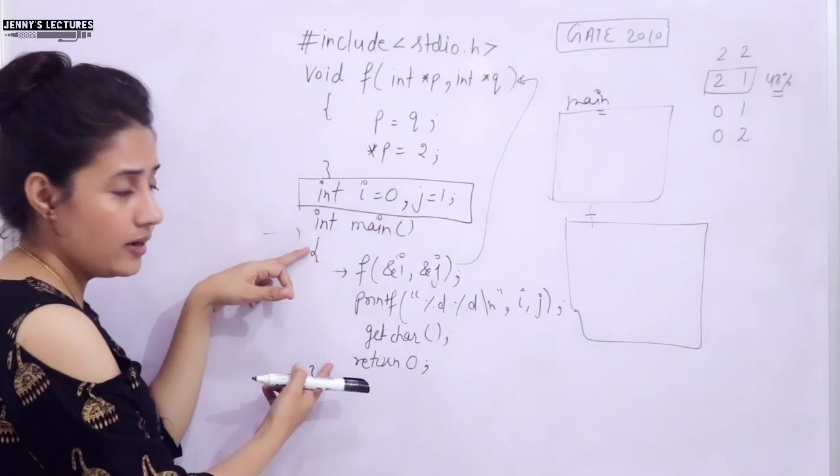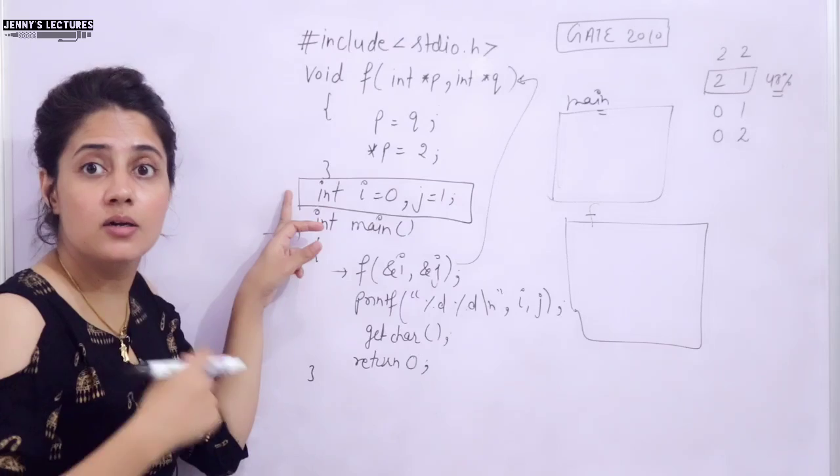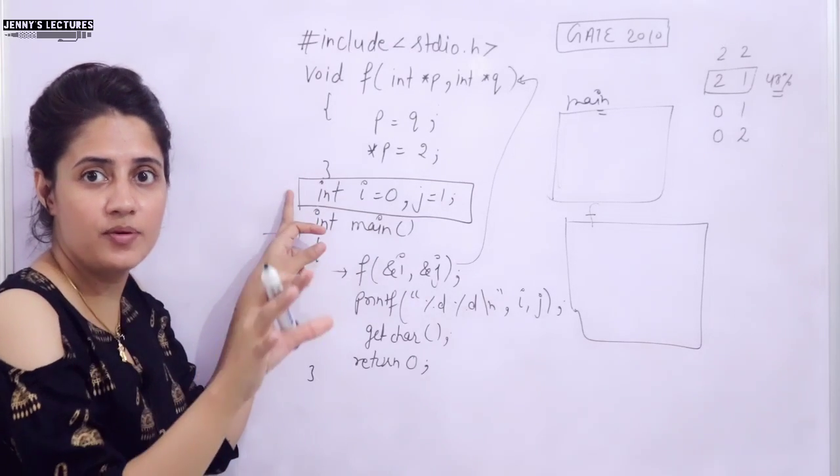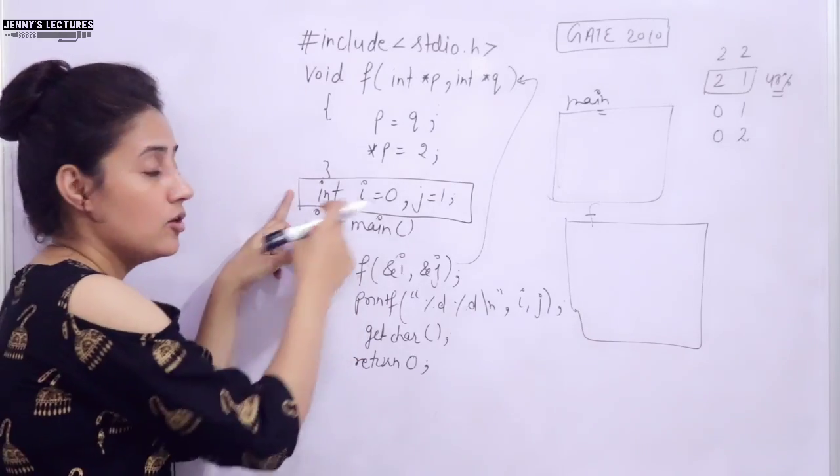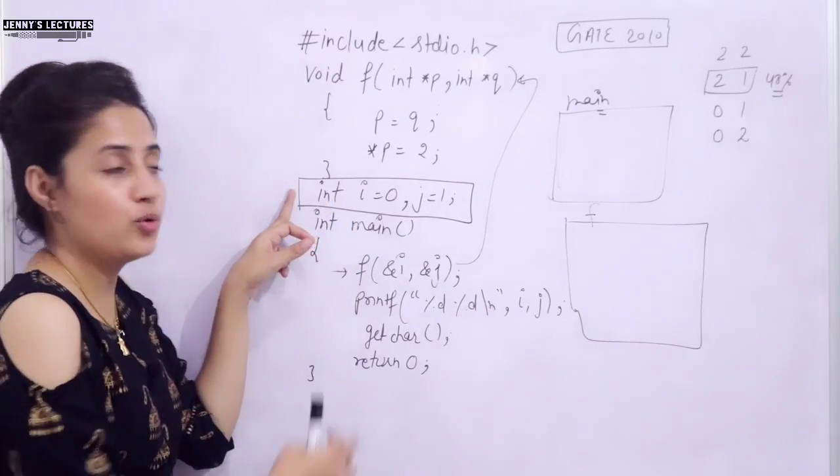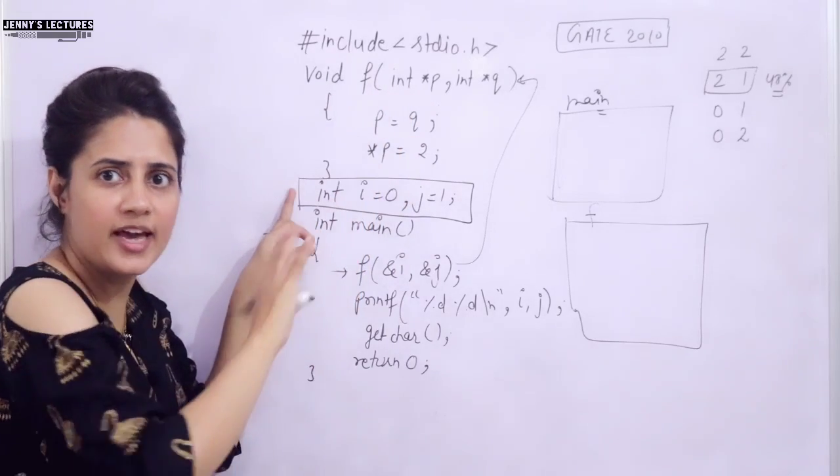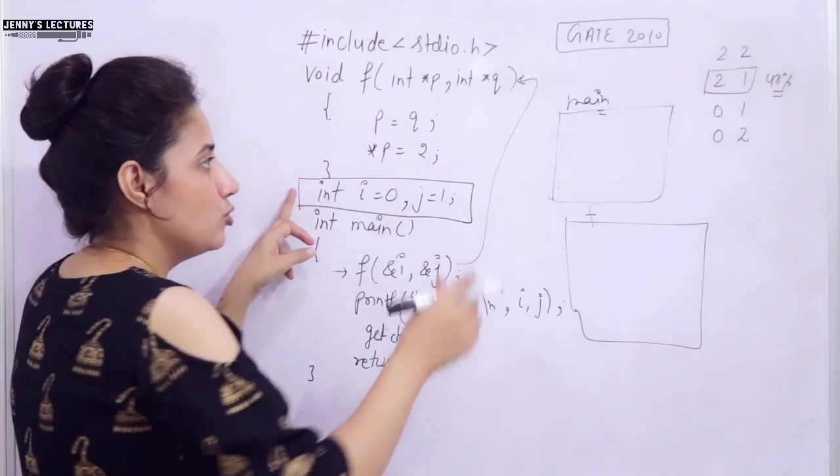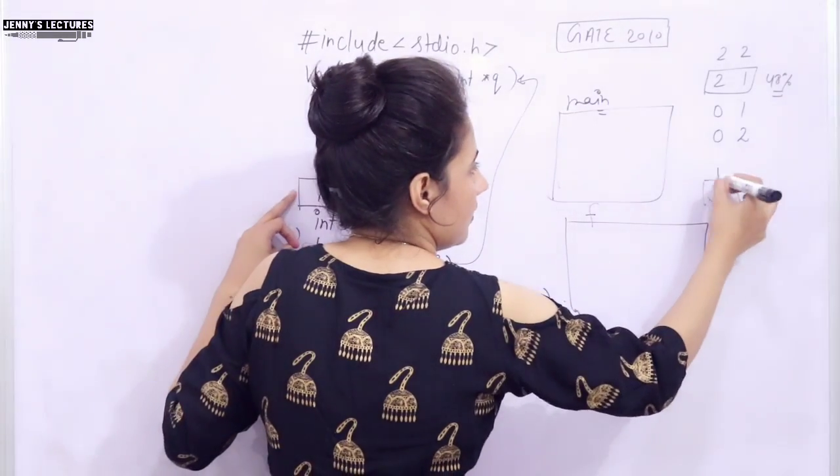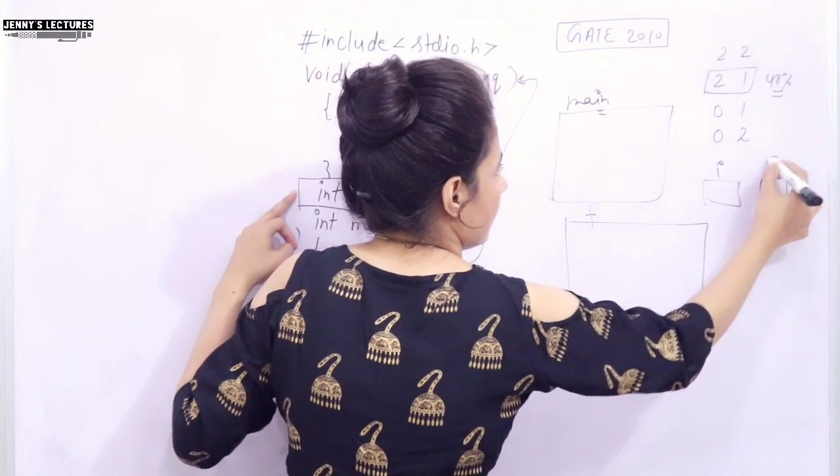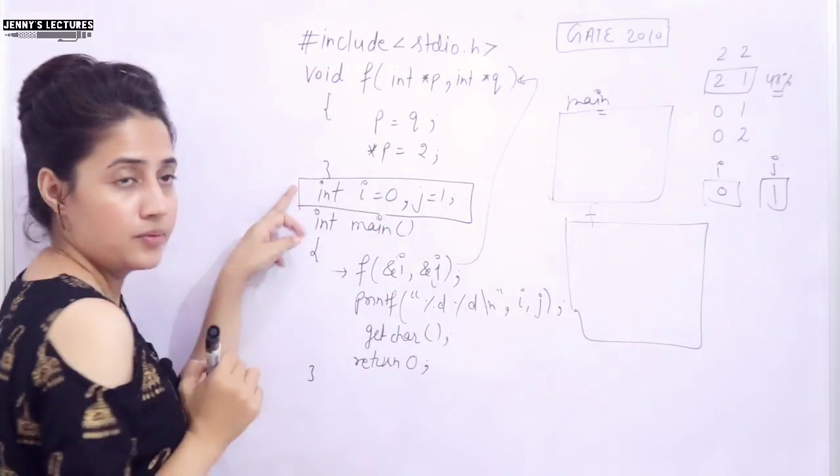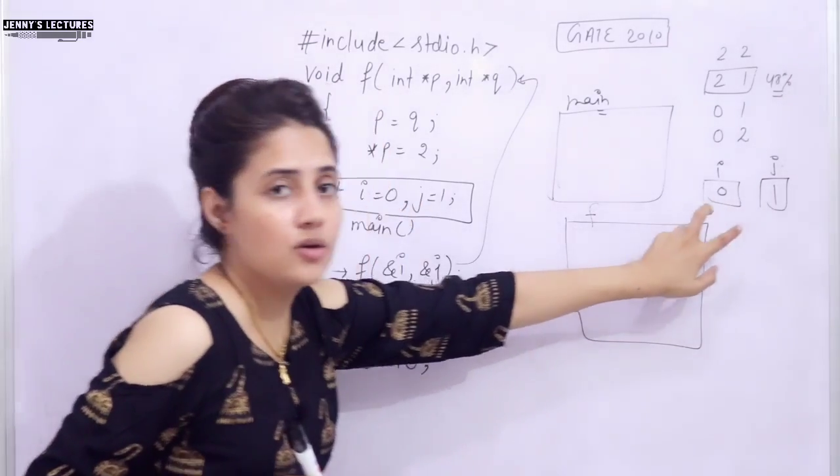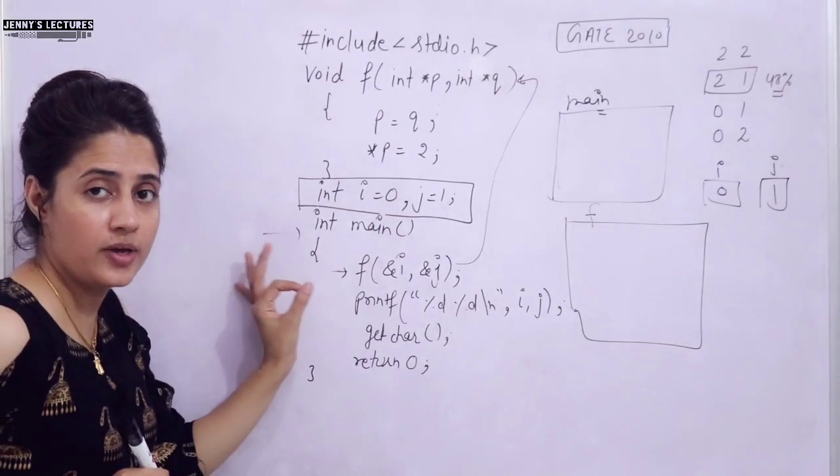It means these are global variables. There is some memory for static and global variables, because the lifetime of static and global variables are throughout the program. You can access these variables in main function also, in this function also. In any function, you can use these variables. These are globally declared. So somewhere in memory, we have i and j. i is 0 and j is 1. These are not within these functions. They are globally declared. So you can access these variables throughout the program. This thing is very important.